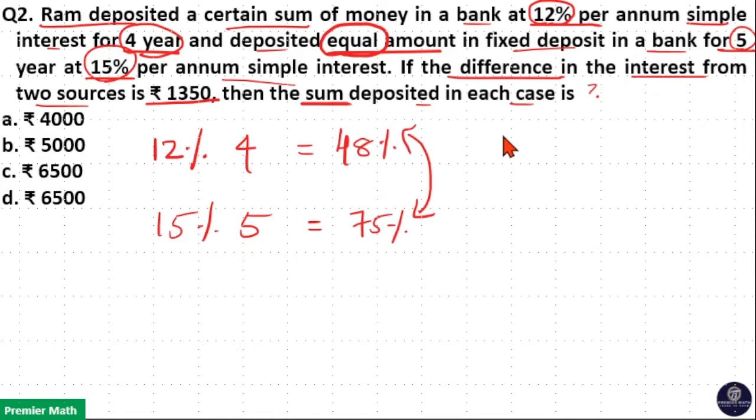Now, the difference in interest from two sources is ₹1350. The difference between 75% and 48% is 27%, which equals ₹1350.